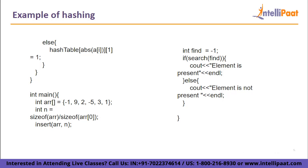Coming to the int main part, we have defined the elements in the array and n, which equals the size of the array divided by the size of one of the elements in the array. Now we call the insert function. Here, we are trying to find the element, and if the element that we are trying to find is in the hash table — which is found using the search function — we print that the element is present. Else, we print that the element is not present.